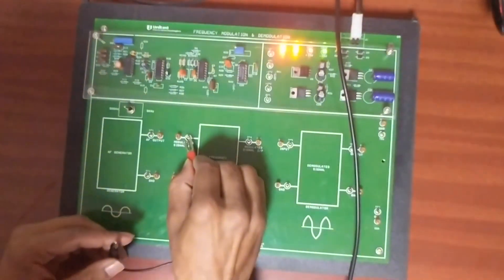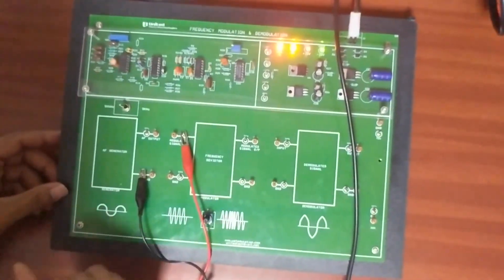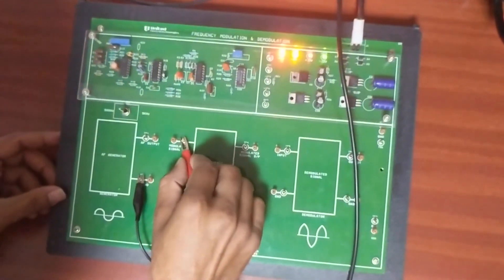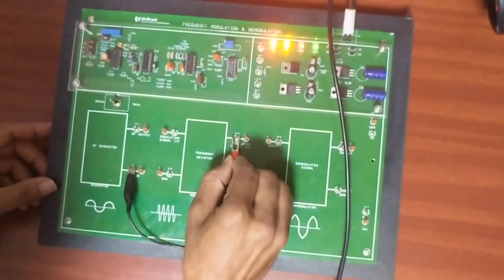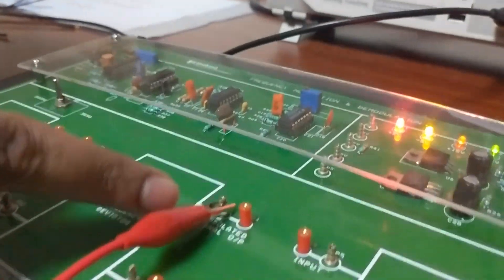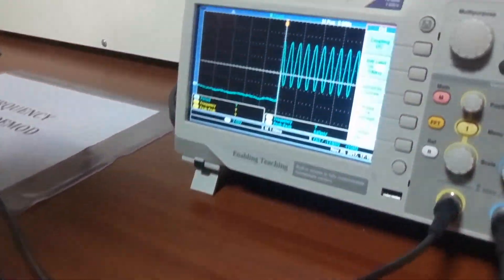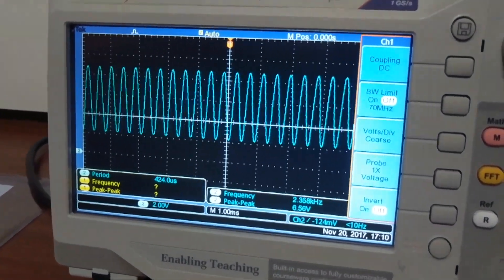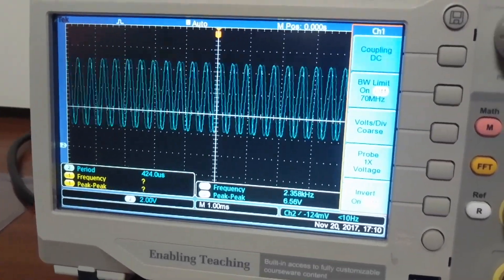Now we can see the carrier frequency over here at this point. Carrier frequency, it has been internally generated. We can check it over at this test point, that is your TP4. The carrier frequency is 2.5 kHz roughly.